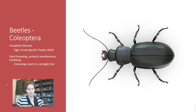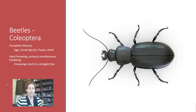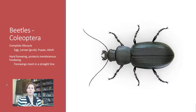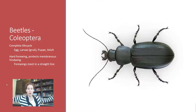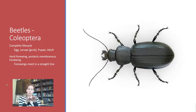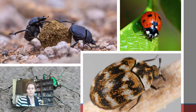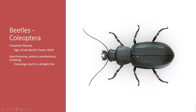Beetles are more advanced insects with a complete life cycle: egg, larva, pupa, and adult. We call the larva a grub. Beetles have something called elytra — their front wing is very hard and protects their soft wings underneath. When they fly, they move the hard wings apart, the soft wings come out, and they take flight. When at rest, the hard wings close and make a perfect straight line down the middle of the back — a key identification feature.